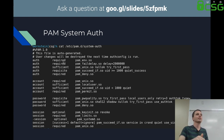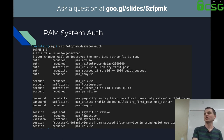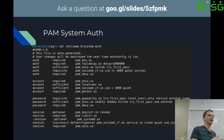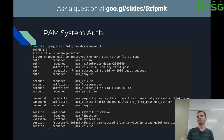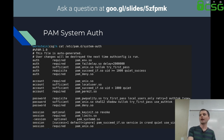You start with pam_env, which has the 'required' directive — if this module fails, the entire stack fails. Similarly with fail_delay. Then you have the 'sufficient' directive, which is very different: if you hit a sufficient directive and you pass, it automatically kicks you out and you have logged in. You finally have 'requisite', which means it'll fail immediately, not go through the entire stack. And then 'required' — if you fail, you fail.